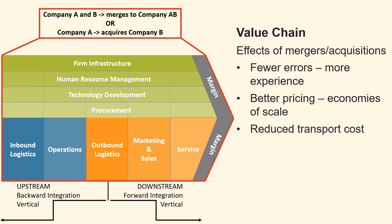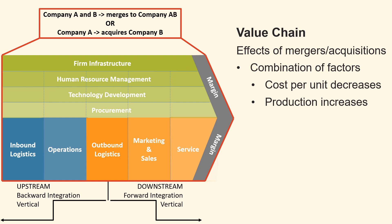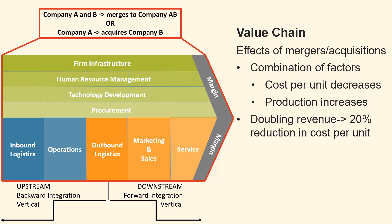Additionally, shipping larger quantities can result in volume discounts from transportation providers. Improved planning and consolidation of larger loads can reduce transportation costs significantly. Increasing production allows the company to use its existing facilities and machinery more efficiently, spreading fixed costs like maintenance and depreciation over more units to reduce cost per unit. When these factors are combined, the total cost per unit decreases as production increases, with a doubling of output associated with a 20% reduction in unit cost.